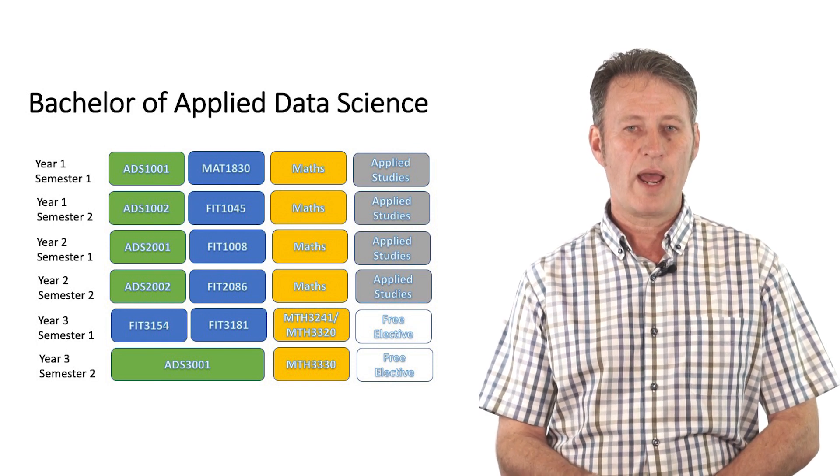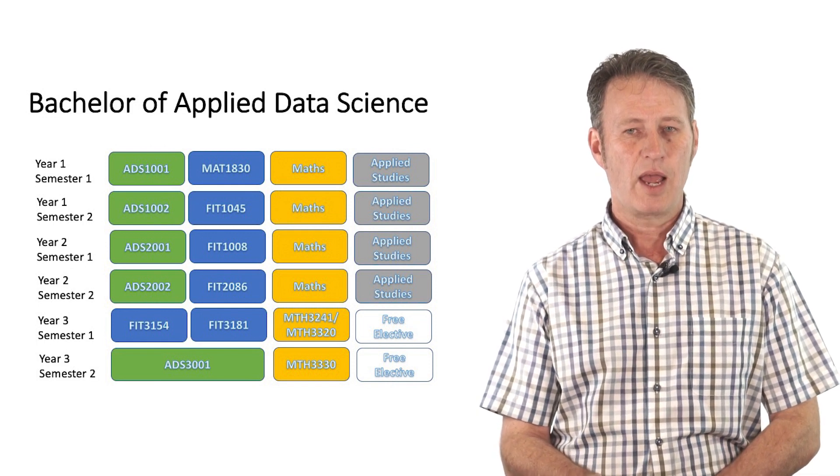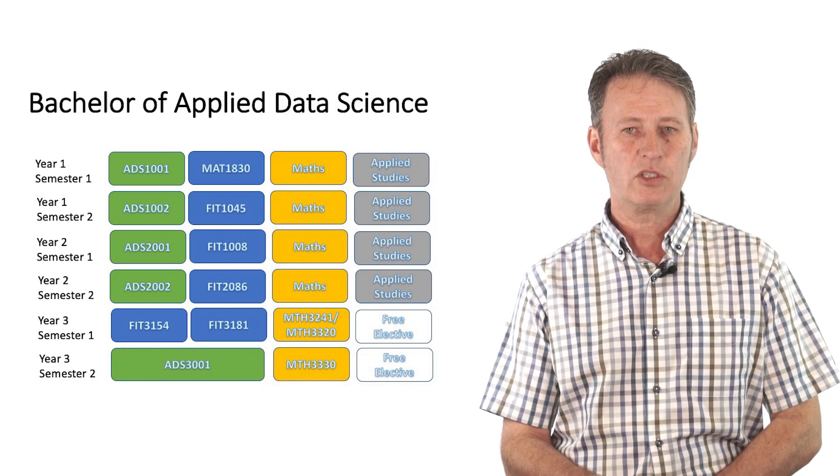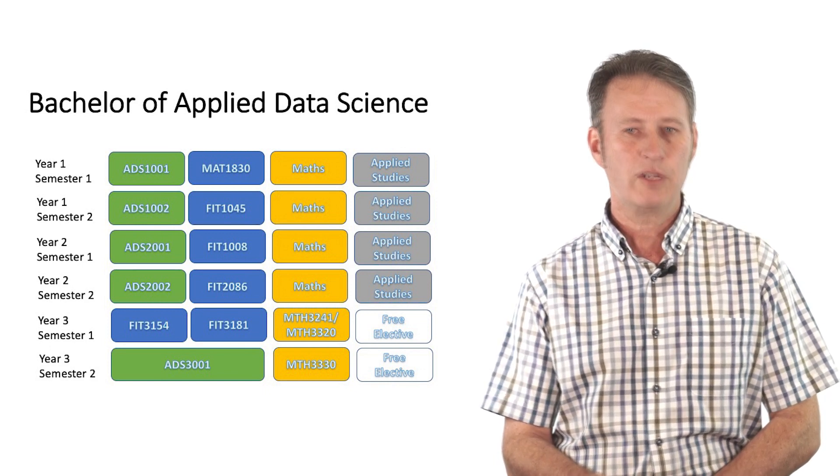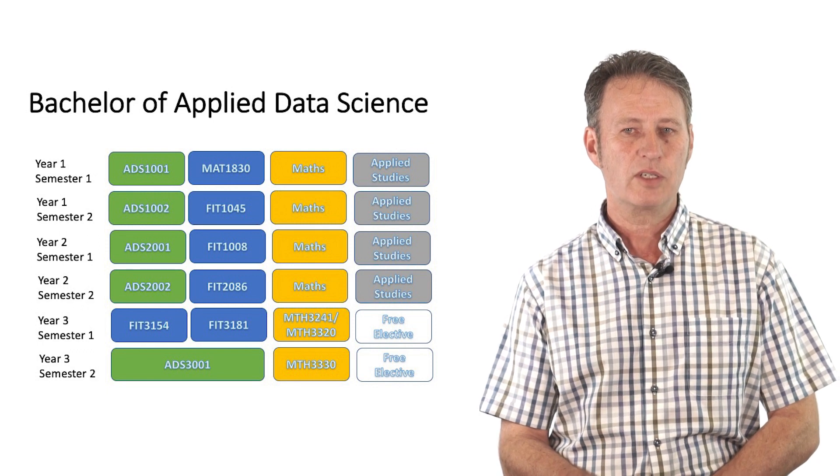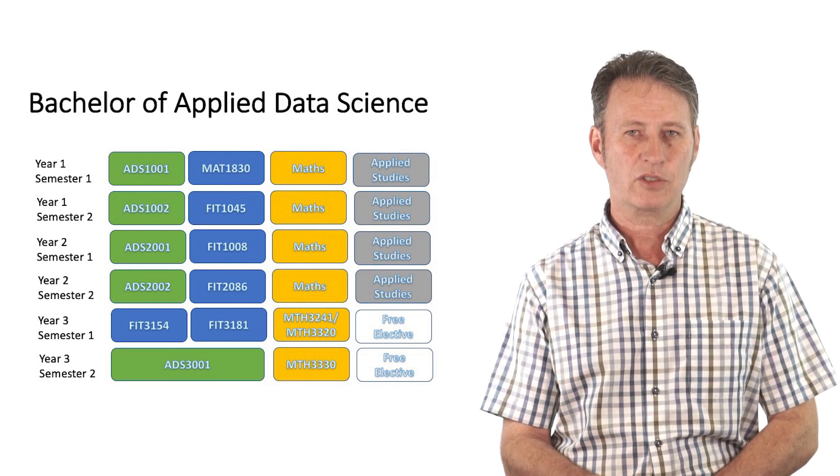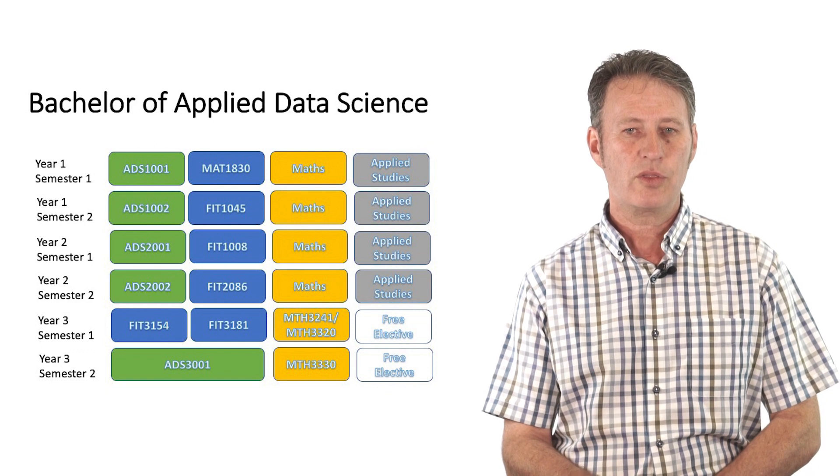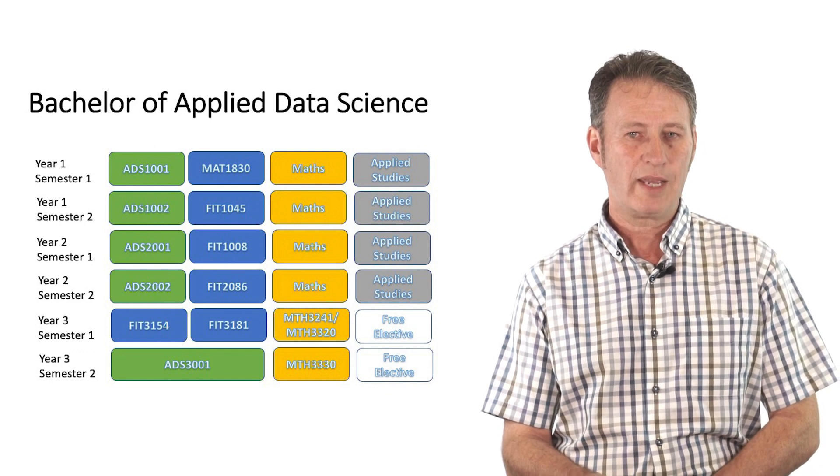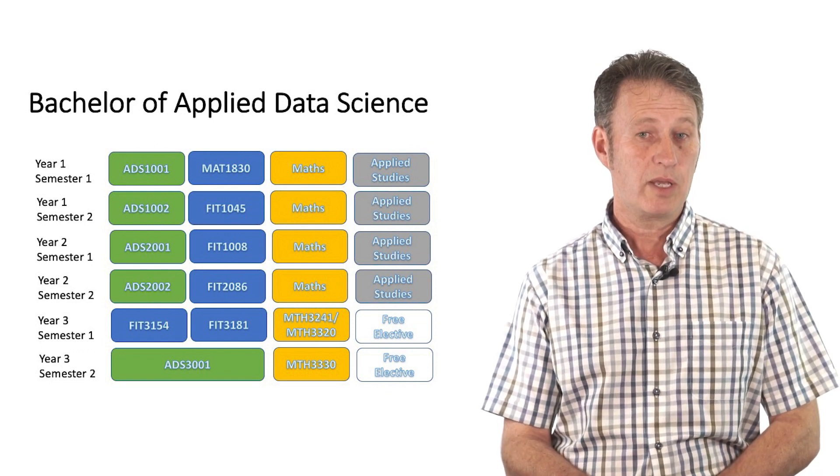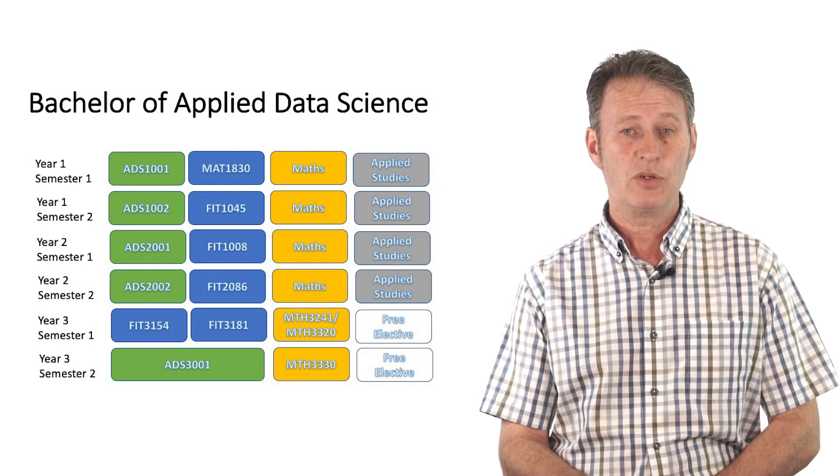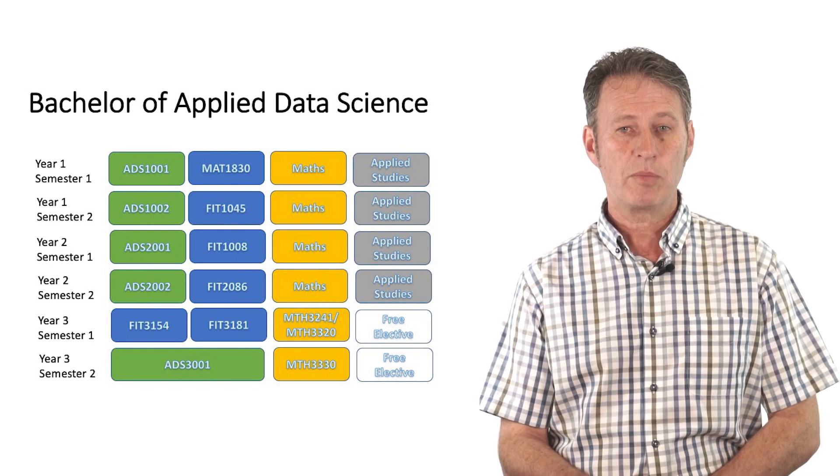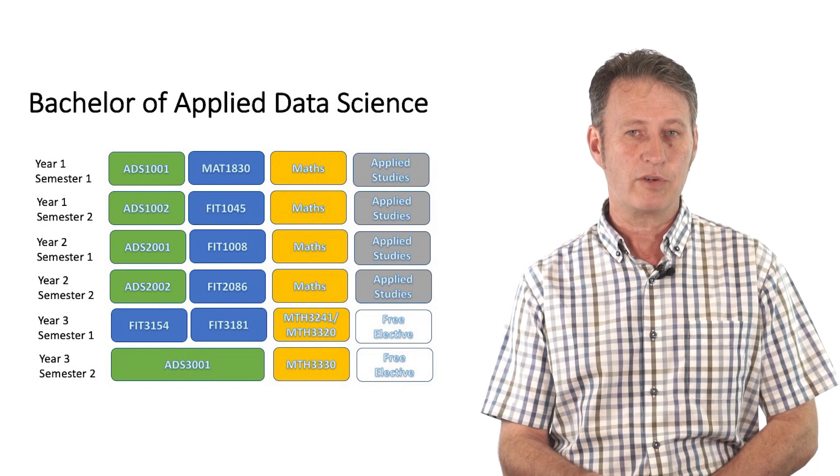The units which are shown in grey are the Applied Studies units, and they correspond to a specific discipline in which you will complete a sequence of four six-point units and provides contextual background for Applied Data Science. Then in your third year, you have two free electives to complete. These can be IT units, Mathematics units, a continuation of your Applied Studies, or they could be something completely different.